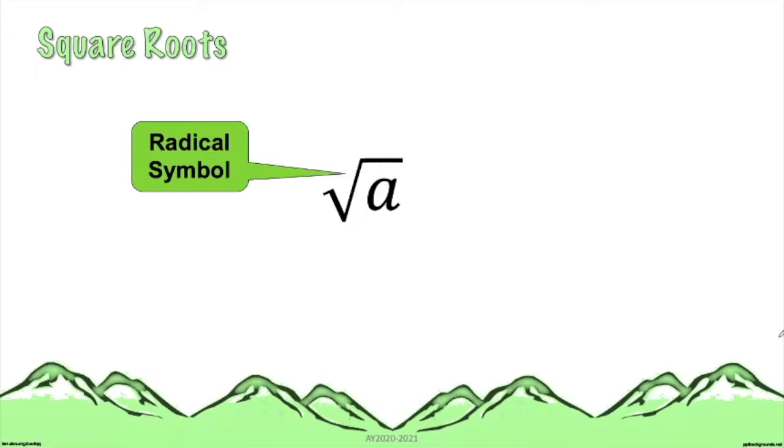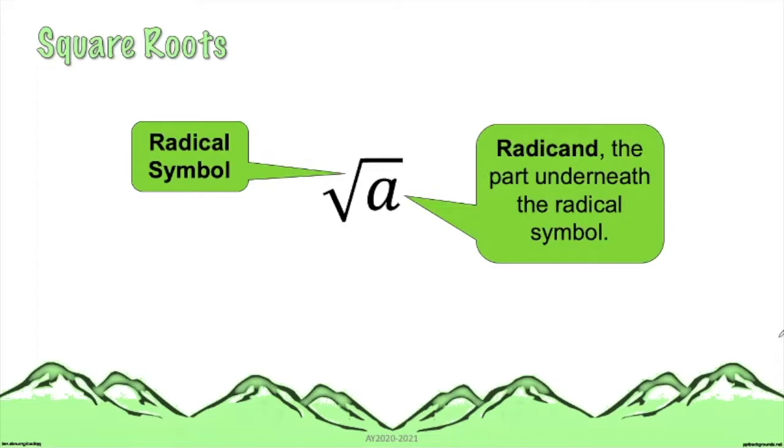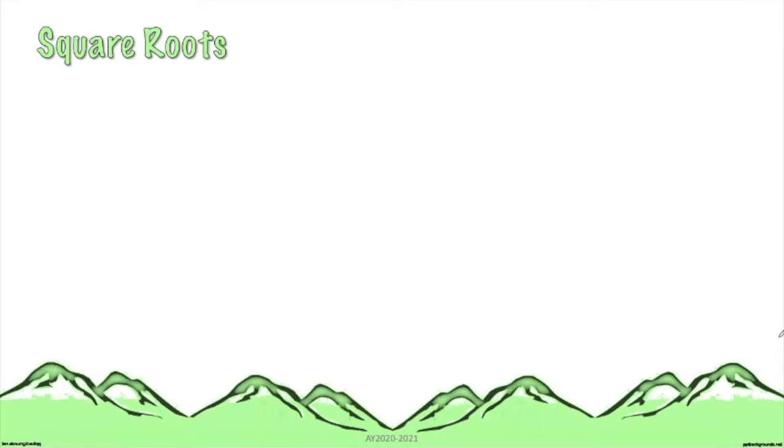Now, we discuss the parts of square roots. We have the following: The symbol is what you call the radical symbol. The part underneath the radical symbol is what you call the radicand. And the radicand and the radical symbol combined together is what you call the radical.